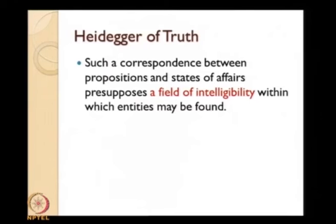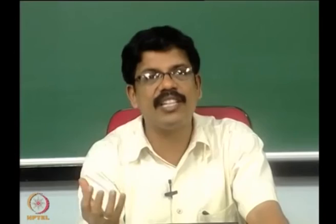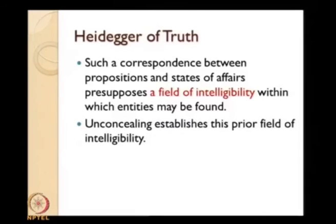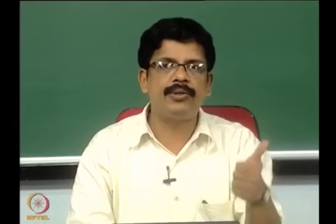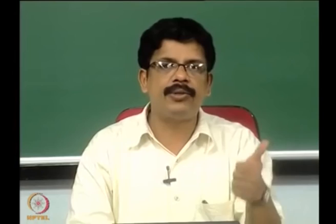Such a correspondence between propositions and states of affairs presupposes a field of intelligibility within which entities may be found. That field of intelligibility is Dasein — the ontological logical horizon. Unconcealing establishes this prior field of intelligibility; it is an a priori transcendental condition even for propositional truth. This notion of unconcealment characterizes truth — truth and knowledge presuppose this unconcealment. Heidegger says this is how truth was understood by the original Greek thinkers, a meaning lost in the history of Western philosophy.